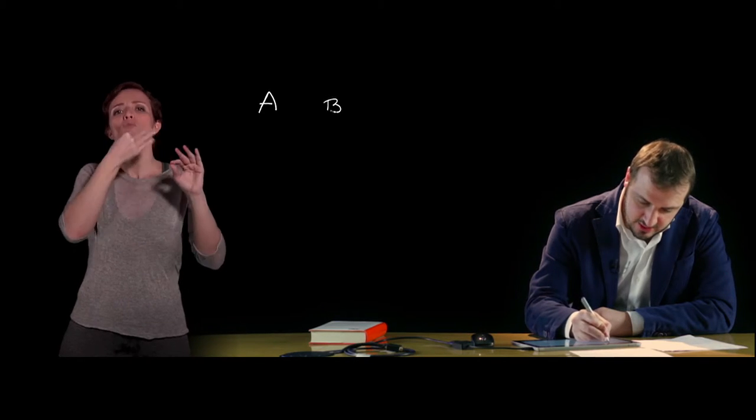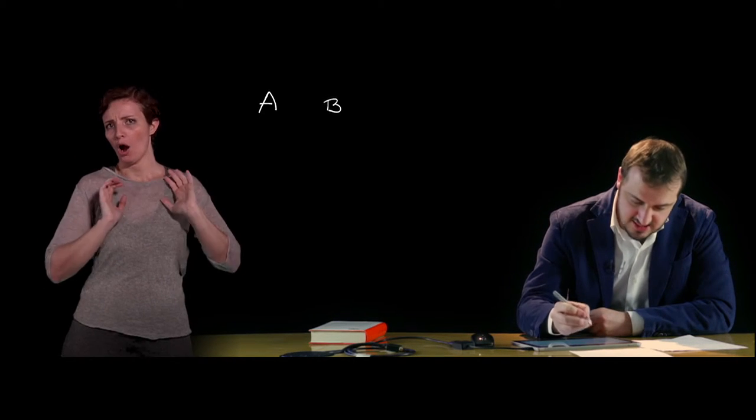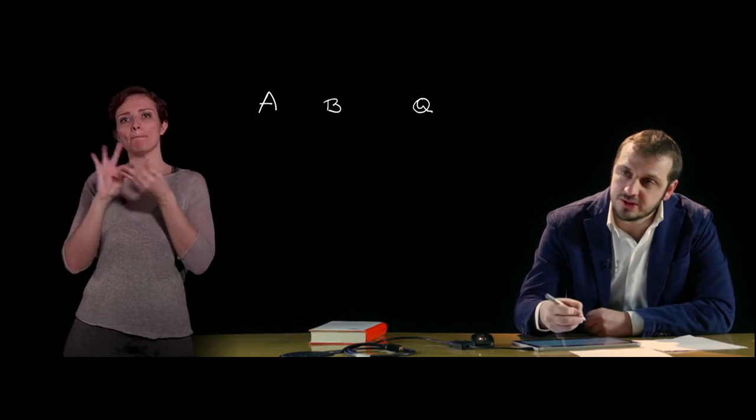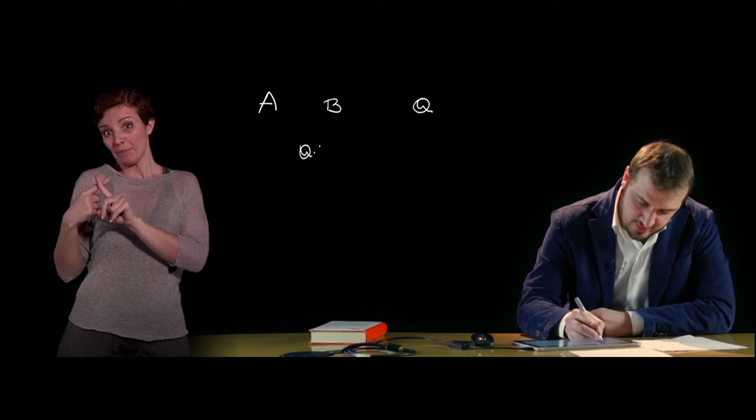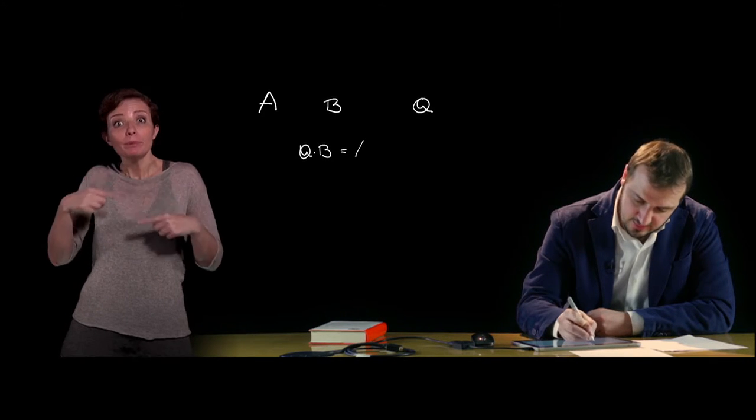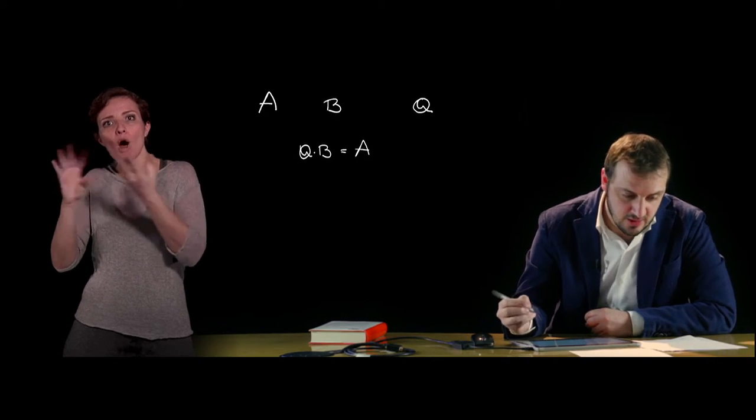Another very important topic regarding polynomials is division between polynomials. A polynomial is divisible by a monomial if every one of its terms is divisible by that monomial, or equivalently if there exists a polynomial which, multiplied by the divisor monomial, yields the original polynomial. So the division between two polynomials A and B is valid if there exists a polynomial Q such that Q multiplied by B gives A.